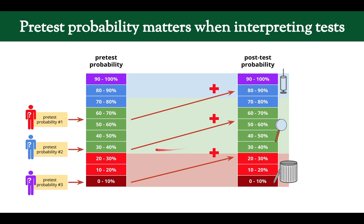For the third patient with higher pre-test probability — still in the 'need to test' zone — the positive test pushed it up to about 85%, crossing the treatment threshold into the treat-it category. This test changed management: it took us from not knowing whether the patient had the disease and allowed us to treat it.